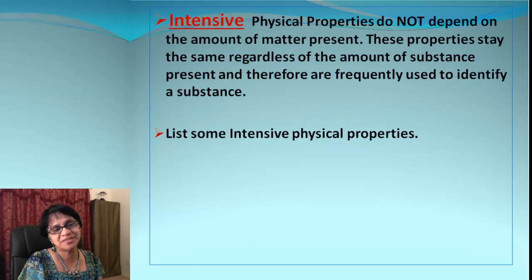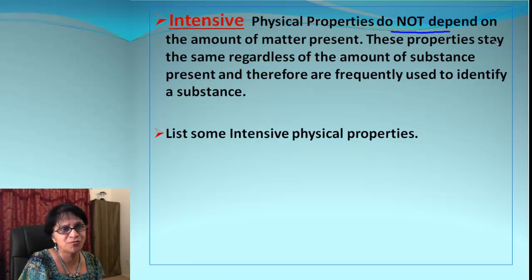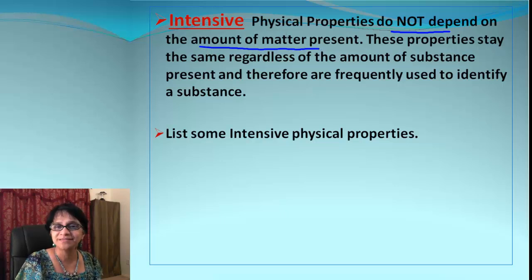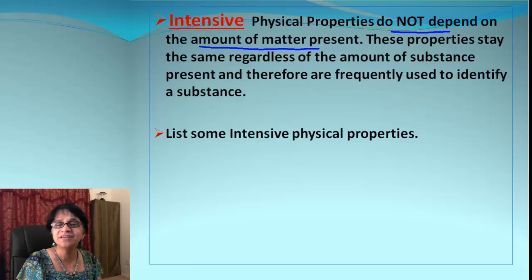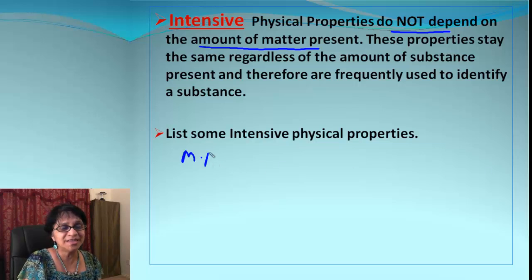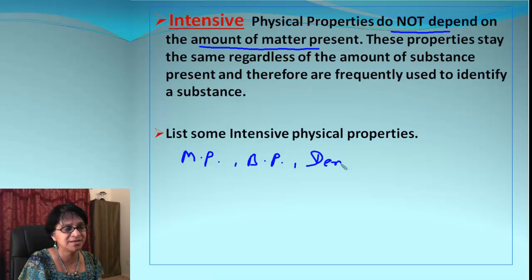An intensive physical property is one that never changes or depends on how much matter is present. Whether I have one kilogram, one gram, or one microgram of a substance, it doesn't matter — those properties will remain the same. Examples include melting point and boiling point for liquids, as well as density.